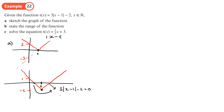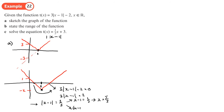To find where the function equals 0, solve 3|x - 1| = 2, so |x - 1| = 2/3. We have two solutions: one where (x - 1) is positive giving x - 1 = 2/3, so x = 5/3; and one where (x - 1) is negative giving x - 1 = -2/3, so x = 1/3. The coordinates of these x-intercepts are x = 1/3 and x = 5/3.